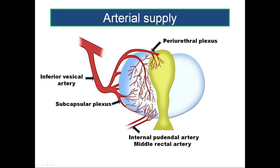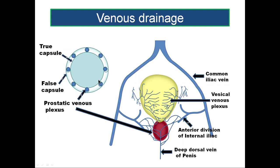Some branches will reach the urethra forming the periurethral plexus, which supplies the inner one-third of the prostate — important when doing transurethral resection of the prostate. The prostatic venous plexus lies between the true capsule of the prostate and the false capsule, communicating anteriorly with the deep dorsal vein of the penis and superiorly with the vesical venous plexus, draining into the internal iliac veins continued as common iliac and inferior vena cava.